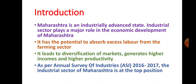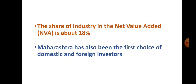The industrial sector leads to diversification of markets, generating higher income and higher productivity. Diversification of market means various types of markets are available with different types of goods and services. As per the Annual Survey of Industries (ASI) 2016-17, the industrial sector of Maharashtra is at the top position as compared to all states in India. The share of industry in the Net Value Added (NVA) is about 18%.